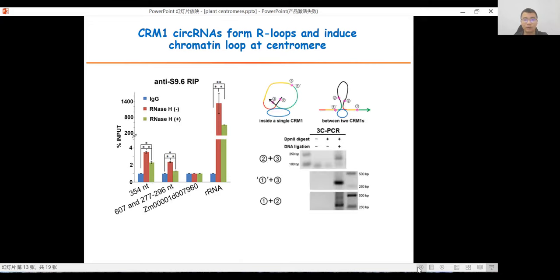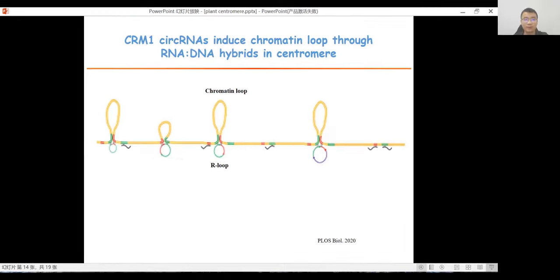We found the chromatin loop was detected in the region containing the R-loop site of the CRM1 element using 3C-PCR. Combining these results, we found that circular RNA from centromeric retrotransposon element CRM1 combined to the centromeric region through RNA-DNA hybrid and promoted chromatin loop formation within the centromeric region. Now we are trying to understand the relationship between non-coding RNAs, the R-loop, and chromatin structure in our de novo centromere systems.